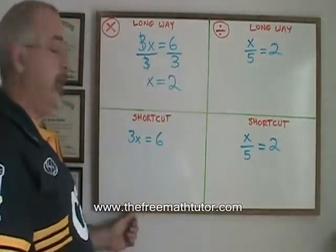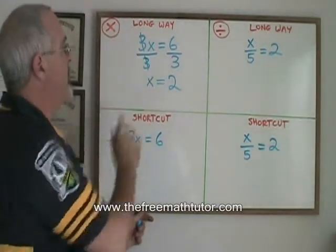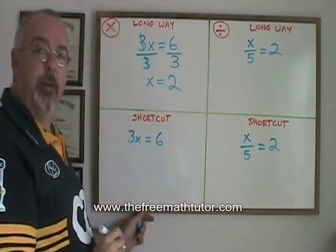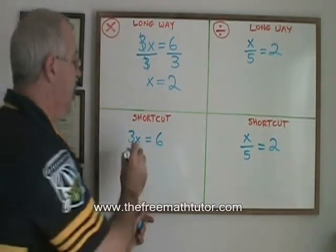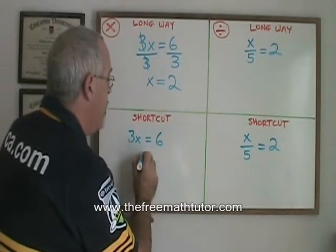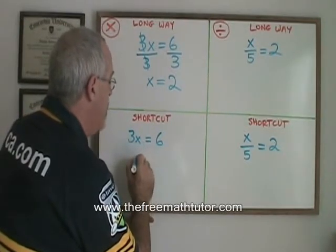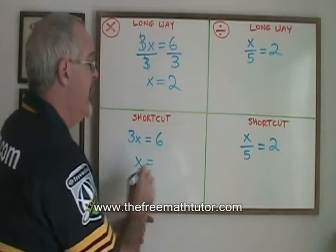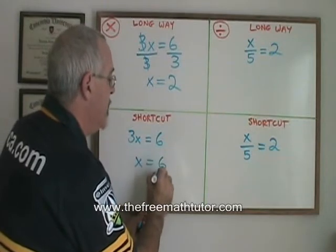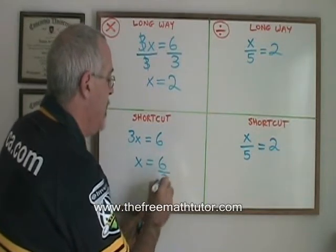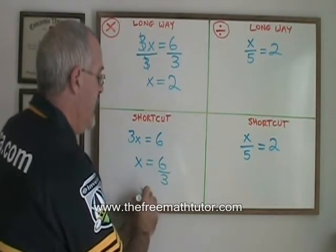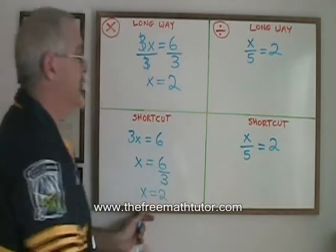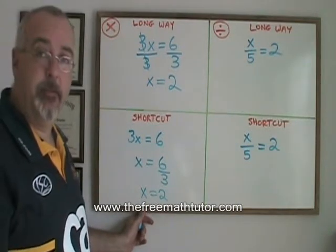With the shortcut, I don't bother showing that I'm dividing the left side by 3. I'm still dividing both sides by 3, but all I do is write my x isolated and I show that I am dividing the other side — 6 by 3. I get x equals 2, which is the same answer and the correct answer.